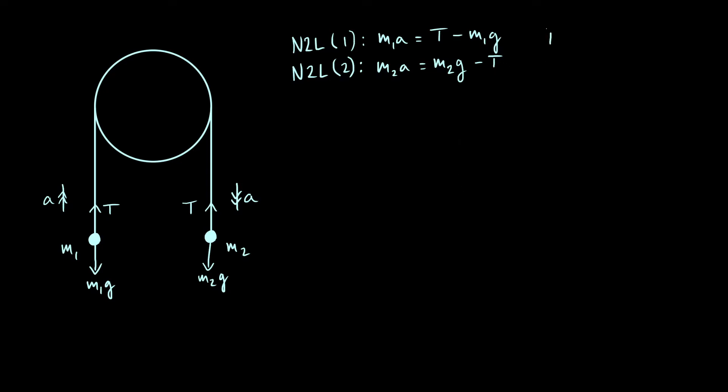Okay, so we've got two equations, one and two, I'm going to label them. It's basically a pair of simultaneous equations for the two unknown quantities, acceleration A and tension T. Now you'll notice that T has a positive sign in equation one and a negative sign in equation two, which means that what we can do is actually just add those two equations together and the T's are going to cancel out.